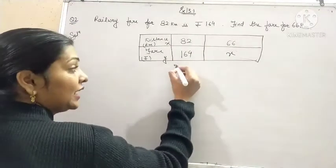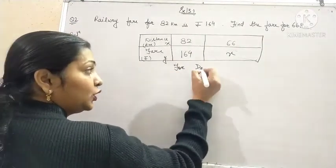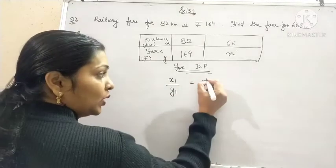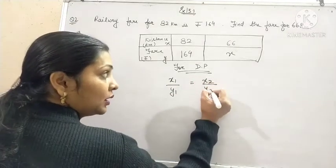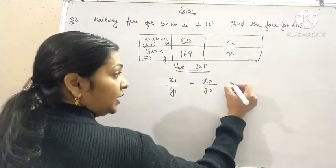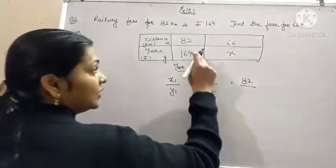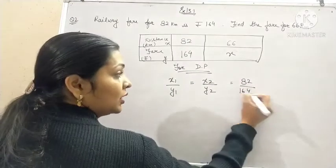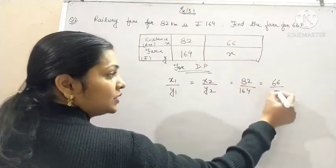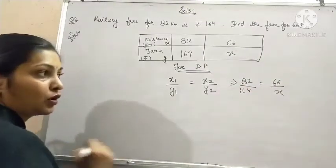Now see for direct proportion, I told you the relation that it is x1 upon y1 is equal to x2 upon y2. Here x1 is 82 and y1 is 164. While x2 is 66 and y2 is x.